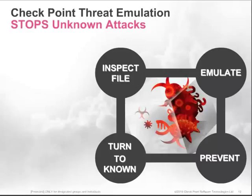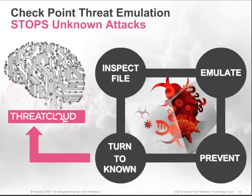A key element of the ThreatCloud architecture is the threat emulation engine. Threat emulation inspects all incoming files and emulates a host environment — acting as if it's your computer — to test what a file might do. If the file shows some malware characteristic, the file is prevented from entering your network, a signature is identified and created, and that signature is added to the ThreatCloud database. ThreatCloud is the fastest, most comprehensive threat protection solution on the market, so we thought it would be interesting to put this to the test against unknown malware.